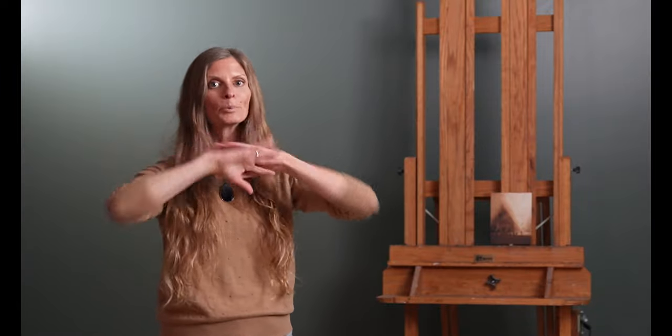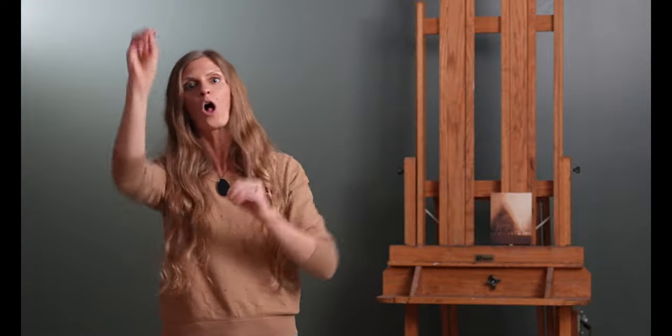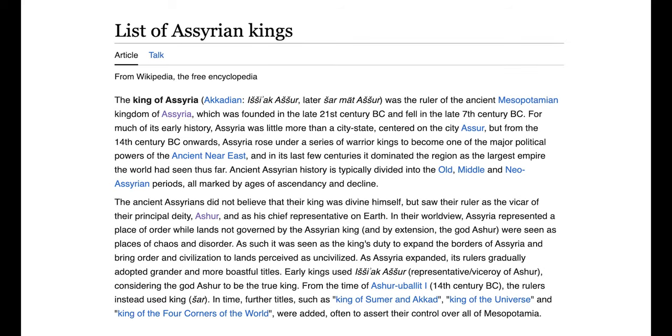So just to give some backdrop to this Assyrian king's arrogance here, let me assure you that it's not just Isaiah pointing this out. Most historians will cite that Assyrians were absolutely brutal dictators. And those historians who aren't so sure that they were all that brutal will still willingly admit that Assyria expected political and religious domination through coercion.